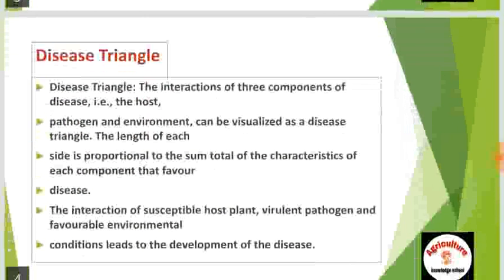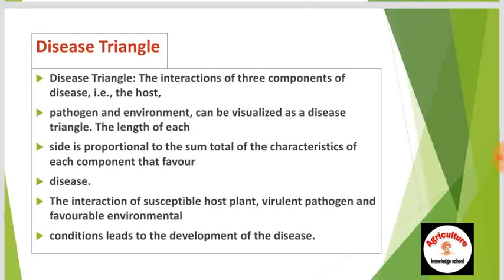Disease triangle. The interaction of three components of disease — the host, pathogen, and environment — can be visualized as a disease triangle. The length of each side is proportional to the sum total of the characteristics of each component that favor disease. The interaction of susceptible host plant, virulent pathogen, and favorable environmental conditions leads to the development of the disease.